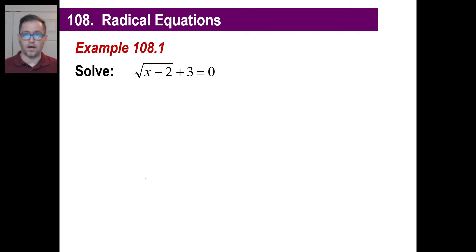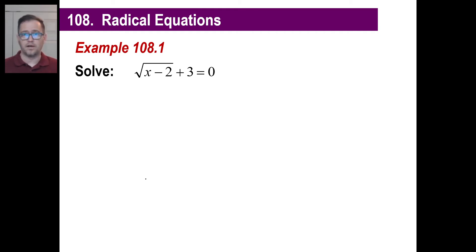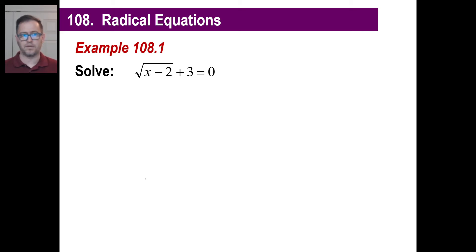Now let's look at solving equations with radicals. It doesn't matter what funky stuff is on there. You still have one objective: get x by itself on one side of the equation. Remember the rule — if you add 7 to one side, you add 7 to the other; if you subtract 13 from one side, you subtract 13 from the other. It's the exact same thing here.